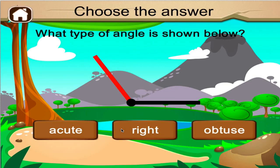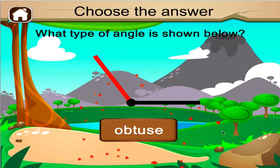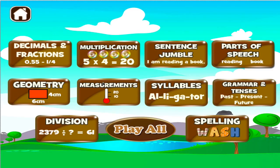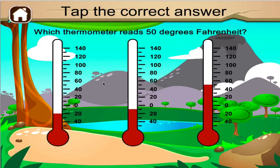What type of angle is shown below? Terrific! What is the air... Which thermometer reads 50 degrees Fahrenheit? Awesome!